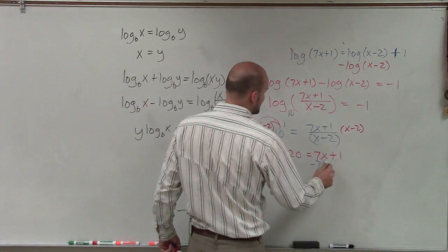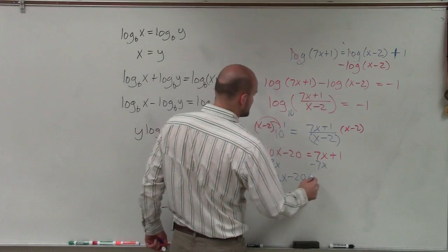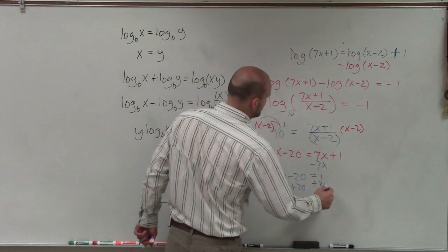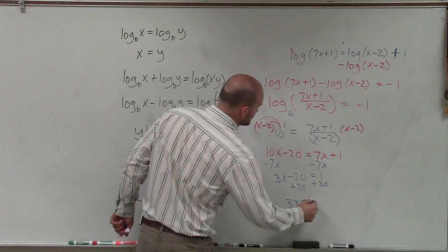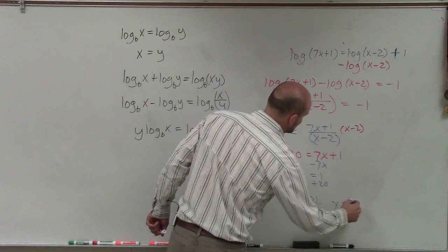Now, to get my x's on the same side, I'll subtract 7x on both sides and I get 3x minus 20 equals 1. So I add 20, and I get 3x equals 21, divide by 3, divide by 3, and I get x equals 7.